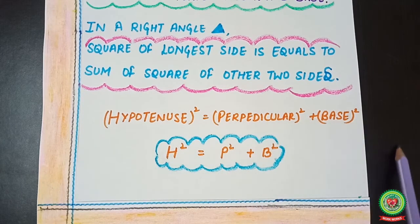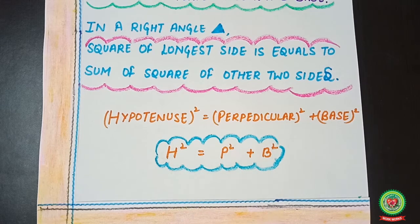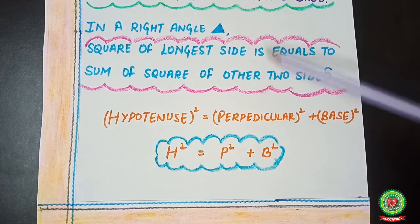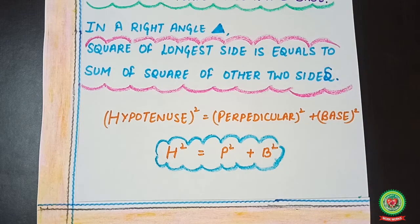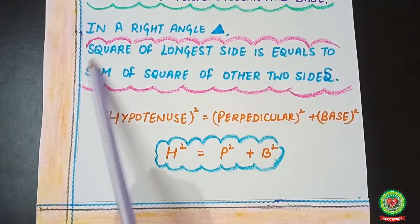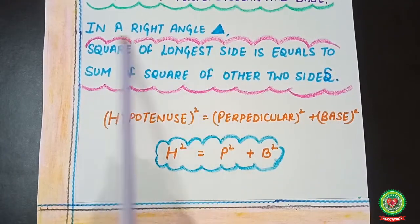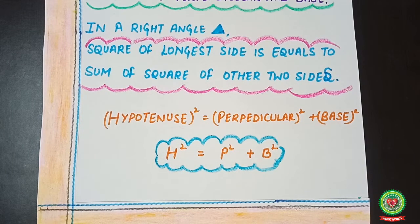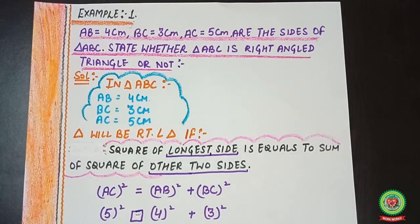So, h² = p² + b², or x² = p² + b². Now, what if we take the opposite of that theorem? That means if this property is satisfied, then only it will be a right angle triangle. This is our new topic for today.